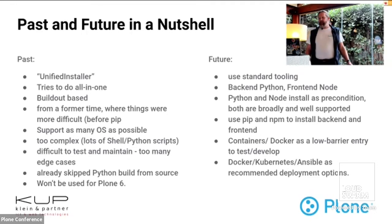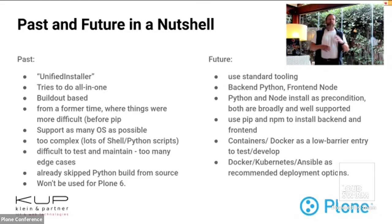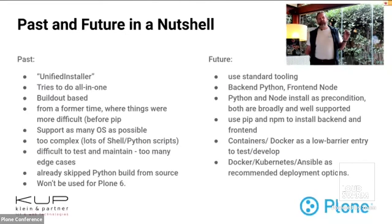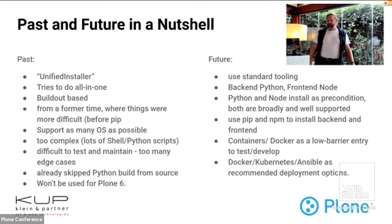That approach is very complex — it has many shell and Python scripts, it's difficult to maintain, and things break across different Linux distributions and new Mac versions. It's difficult to test. We already skipped building Python for the 5.2 version. We decided we don't want to use this old unified installer anymore — it had its time and worked for that use case, but we need to rethink everything. It won't be used for Plone 6 and future versions; we want to use standard tooling.